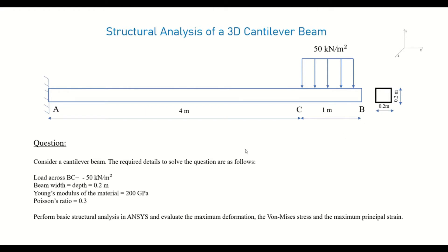The beam material properties are: Young's modulus is 200 gigapascals and Poisson's ratio is 0.3. We have to use ANSYS Workbench to perform structural analysis and evaluate maximum deformation, Von Mises stress, and maximum principal strain. Now let us see how to do that in ANSYS Workbench.